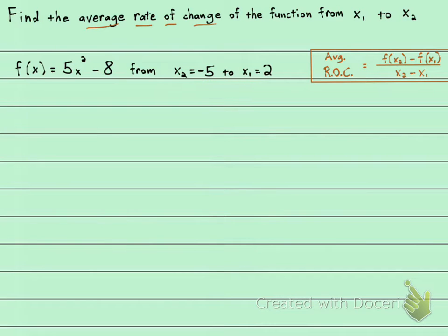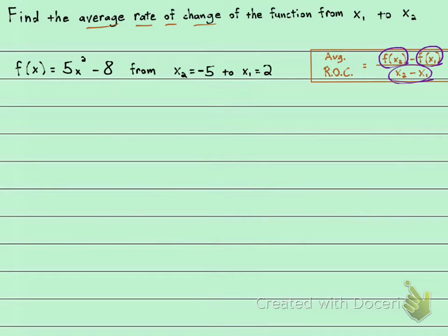We have a formula that will tell us the average rate of change, and it's really just the slope. It's the y value of x2 minus the y value of x1, over the difference in the x values.